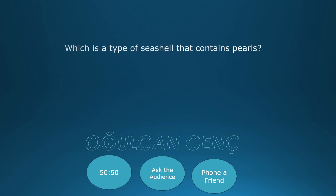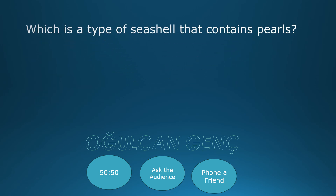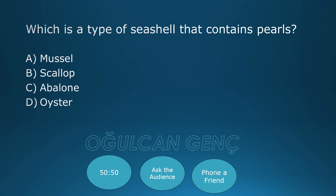Which is a type of sea shell that contains pearls? Mussel, Scallop, Abalone, Oyster. Correct answer: Oyster, D.